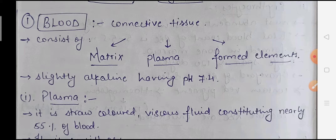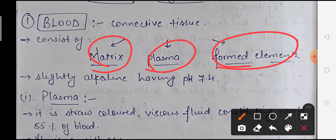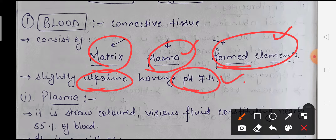Blood is a type of connective tissue. All connective tissues have one main characteristic feature: they have some kind of matrix. That matrix can be liquid, solid, rigid, or dense. In the case of blood, that matrix is a liquid matrix, a fluid matrix. Blood consists of three things: matrix, plasma, and formed elements. The pH of blood is slightly alkaline, at 7.4 - this is frequently asked in competitive exams.